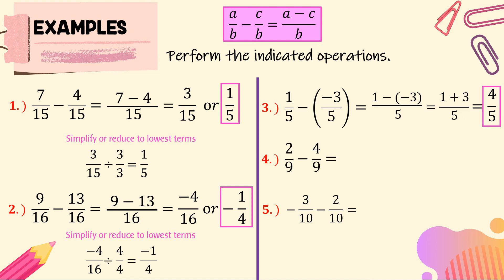For number 4, we have 2 over 9 minus 4 over 9. First, subtract the numerators, then copy the common denominator, 9. So 2 minus 4 is equal to negative 2 over 9. Here, negative 4 is greater than positive 2, so the result is negative 2. Negative 2 over 9 has no common factor. The negative on the numerator can also be written aligned to the fraction bar.